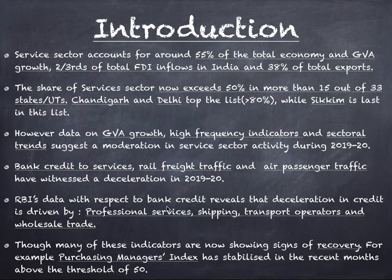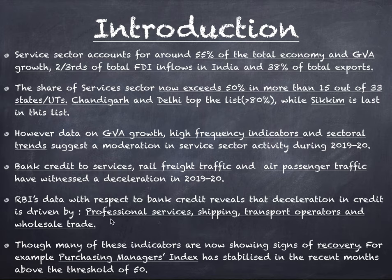RBI's data on bank credit reveals that deceleration in credit is driven by professional services, shipping services, transport operators, and wholesale trade. The fall in bank credit was most in professional services — like lawyers, doctors. Shipping sector, transport sector, and wholesale trade also saw reduced bank credit. These four services single-handedly brought down the overall bank credit to the services sector.